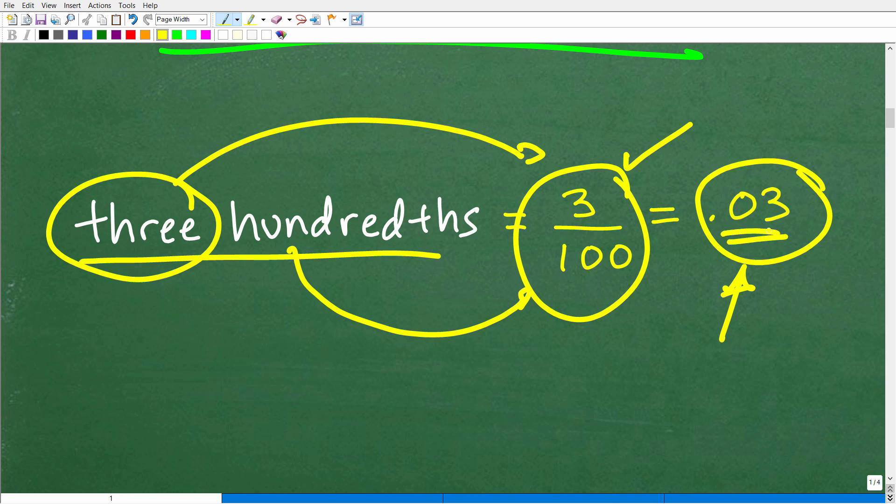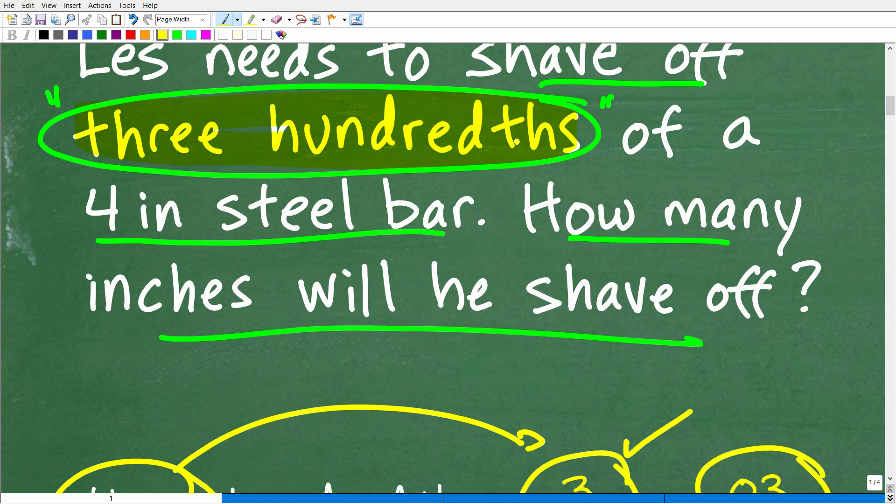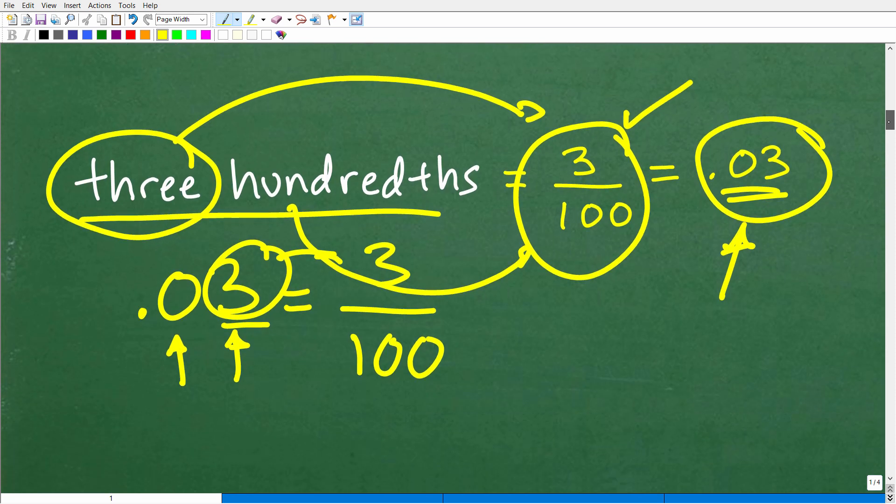But in this particular problem, we need to understand, let's just review the situation. So Les wants to shave off this much off this four inch steel bar. How many inches will he shave off? Well, we can't solve this problem unless we understand what three hundredths is as a number, because three hundredths here is a word. So what value, what numeric value is three hundredths? Well, this goes to this concept of place value. And if you forgot place value, don't worry about it because most of us have been away from this material for many years.